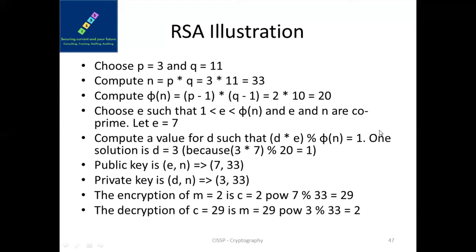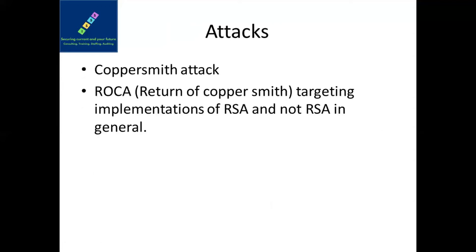For your CISSP examination, you won't be asked to perform the actual encryption/decryption illustrations — just understand how RSA works conceptually, as with the Playfair and Vigenère ciphers. However, you should remember RSA attacks: the Coppersmith attack and the ROCA attack. You don't need to go deep into them, but you should know that RSA is not immune to attack and has been vulnerable to both the Coppersmith attack and the ROCA attack.